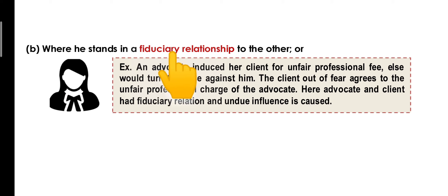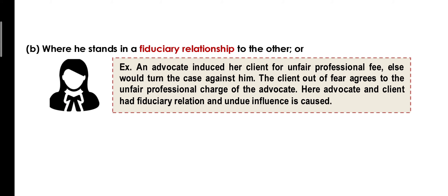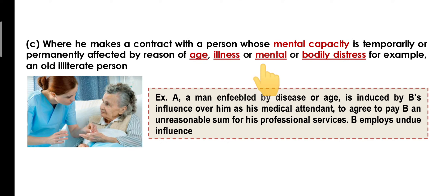Point number two: agar do logon ke beech fiduciary relationship ho toh court undue influence presume karega. Fiduciary relation means a relation of trust — jaise ek advocate and client mein hota hai, where the advocate knows all the good and bad secrets of the client and does not disclose them to anyone, and also fights for the client's defense in court. Similarly, fiduciary relation exists between doctor and patient, teacher and student, father and son, husband and wife.